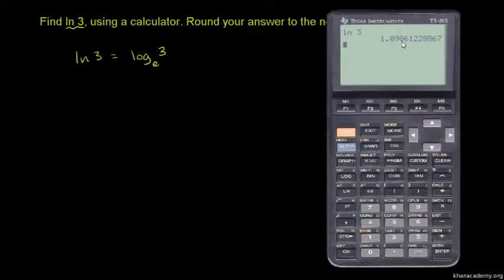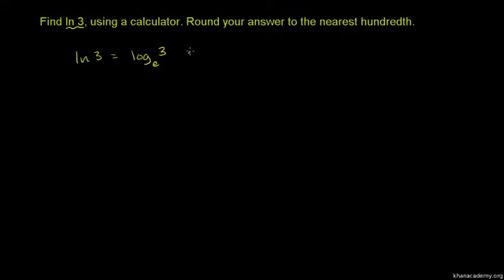Now we round to the nearest hundredth place. The natural log of 3 is 1.098, so rounded to the nearest hundredth it becomes 1.10.